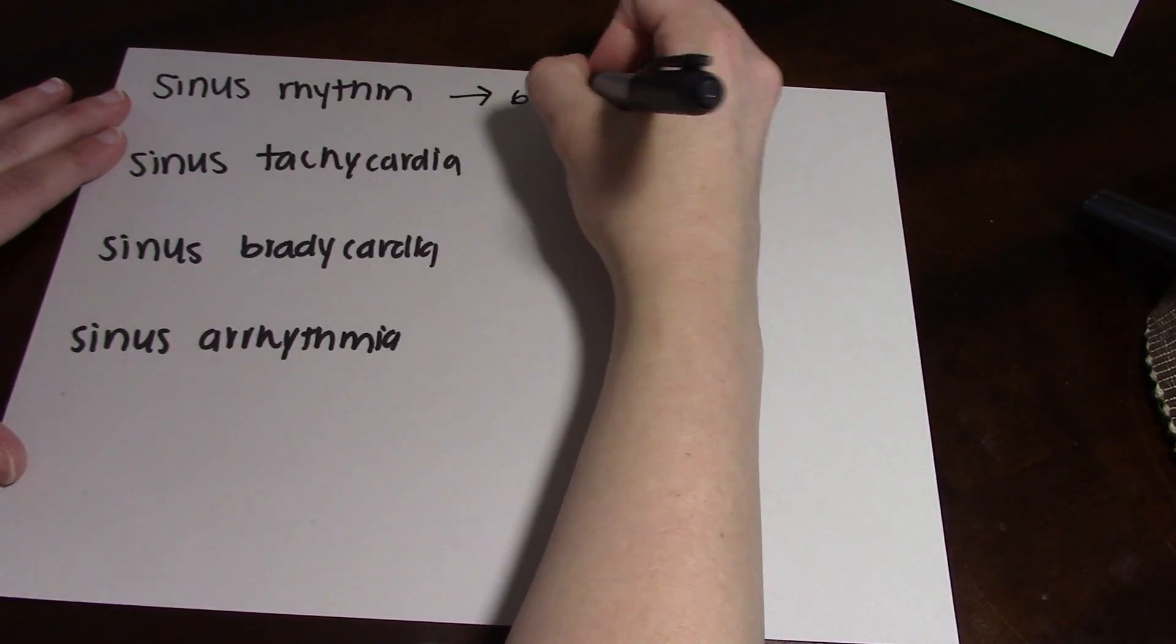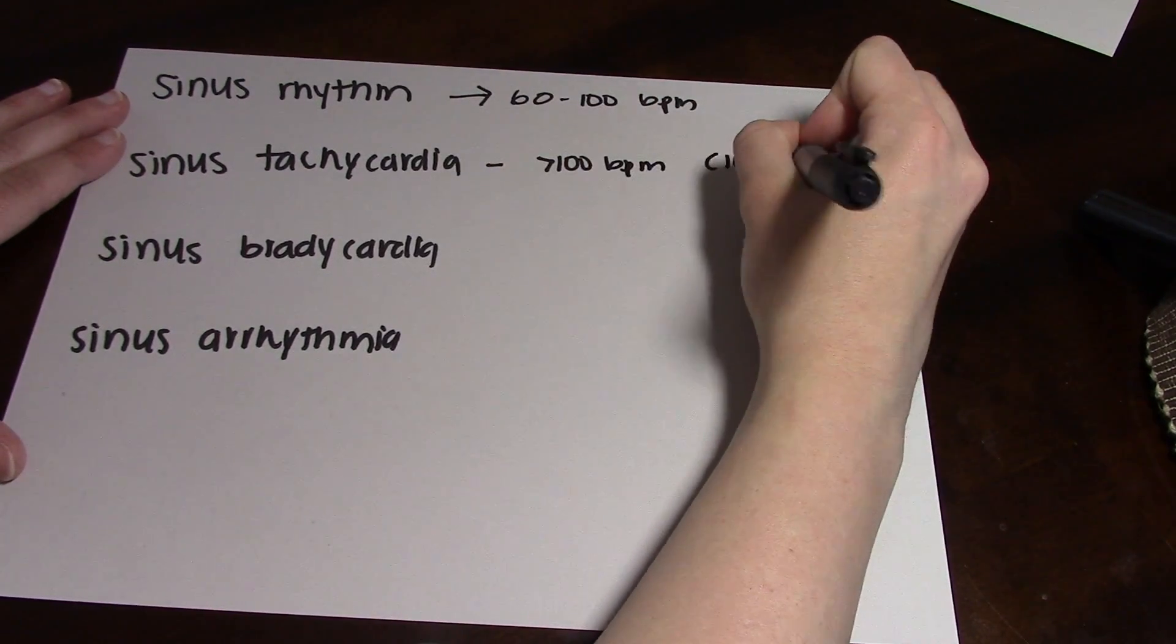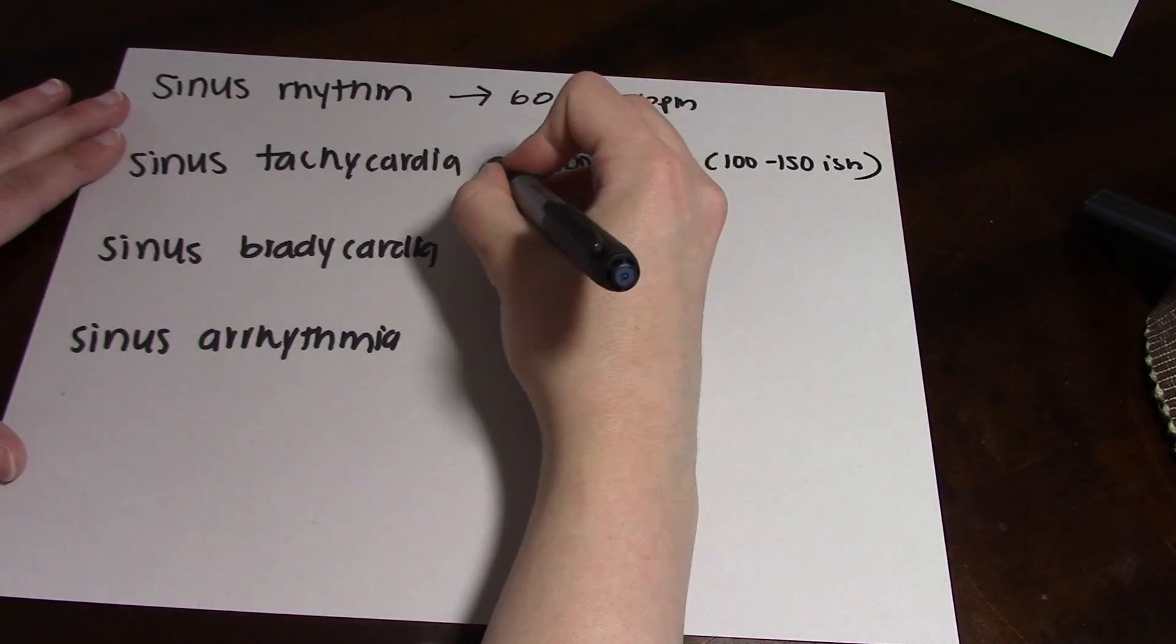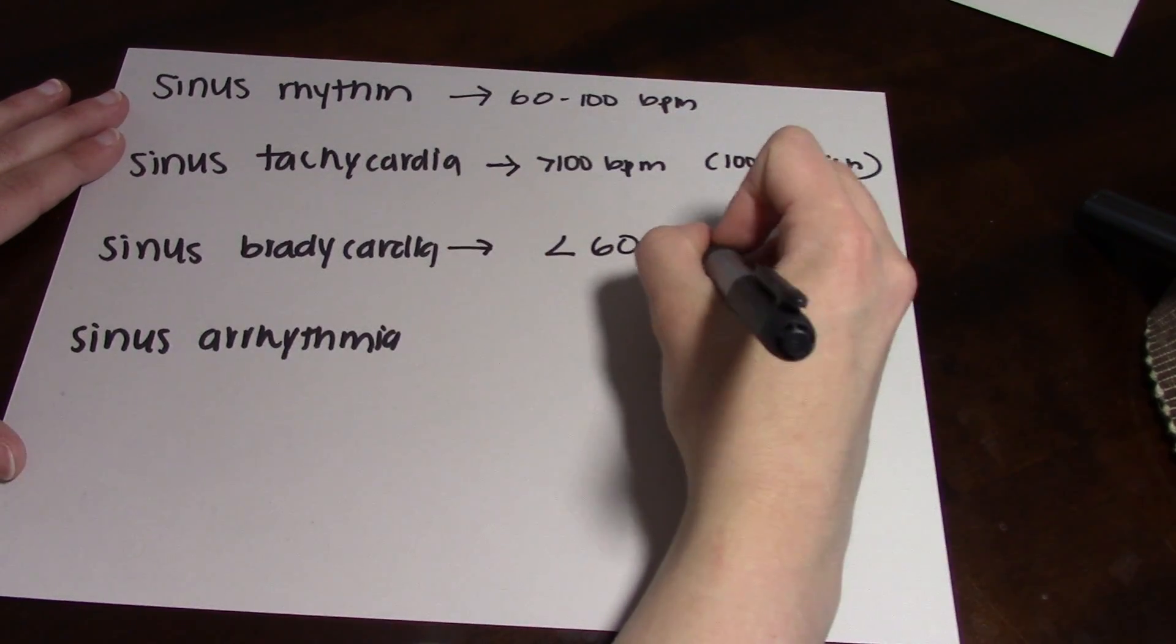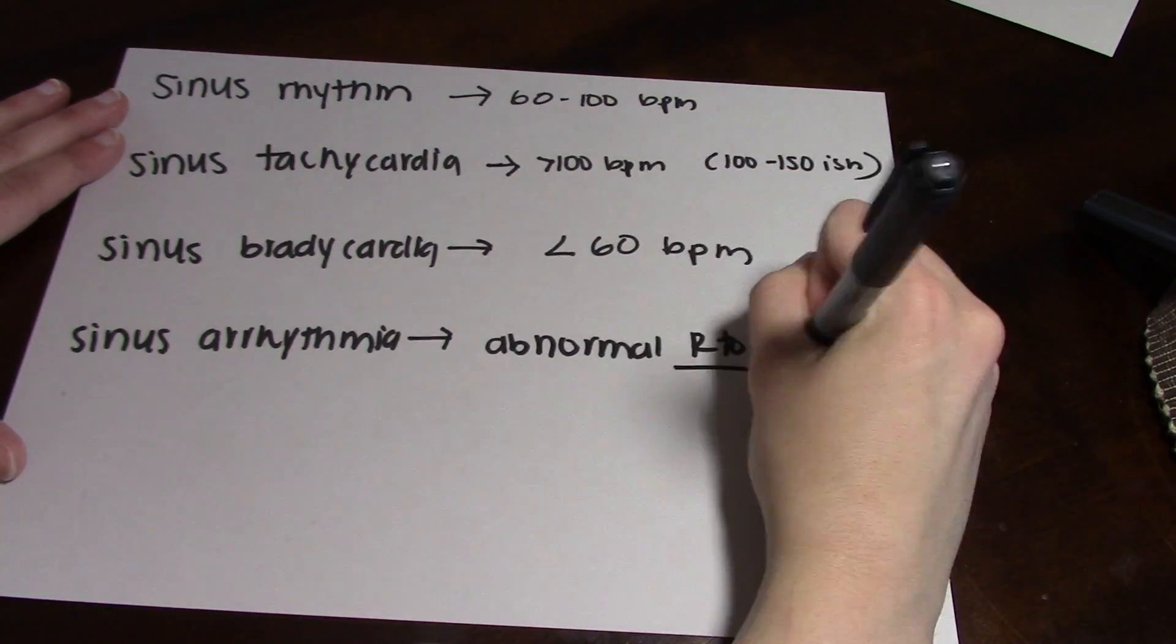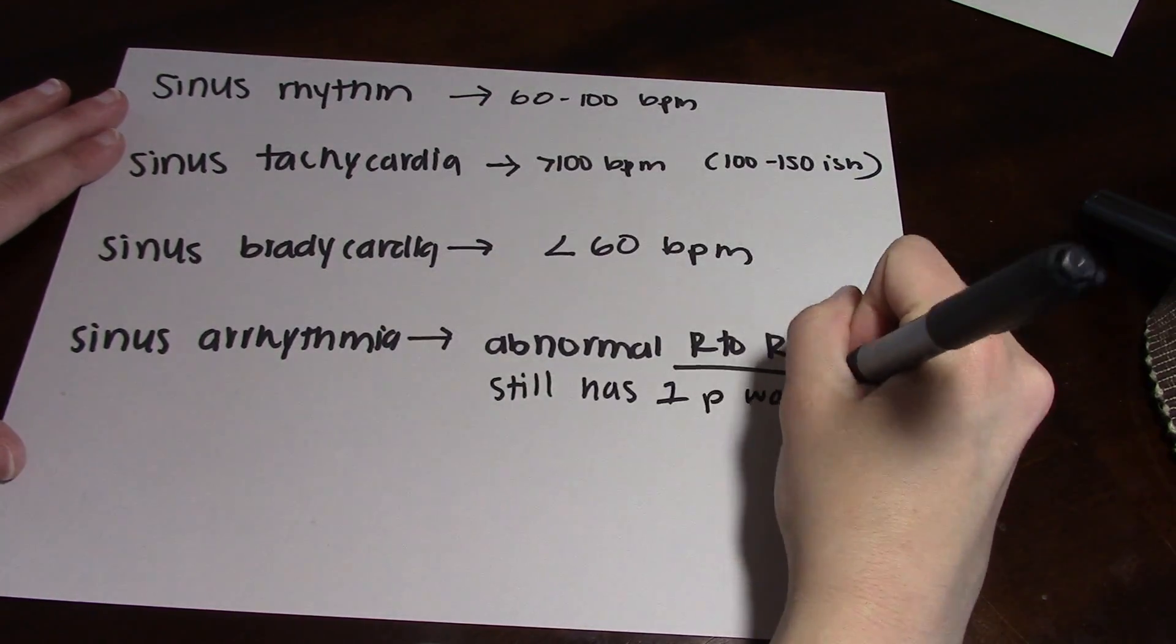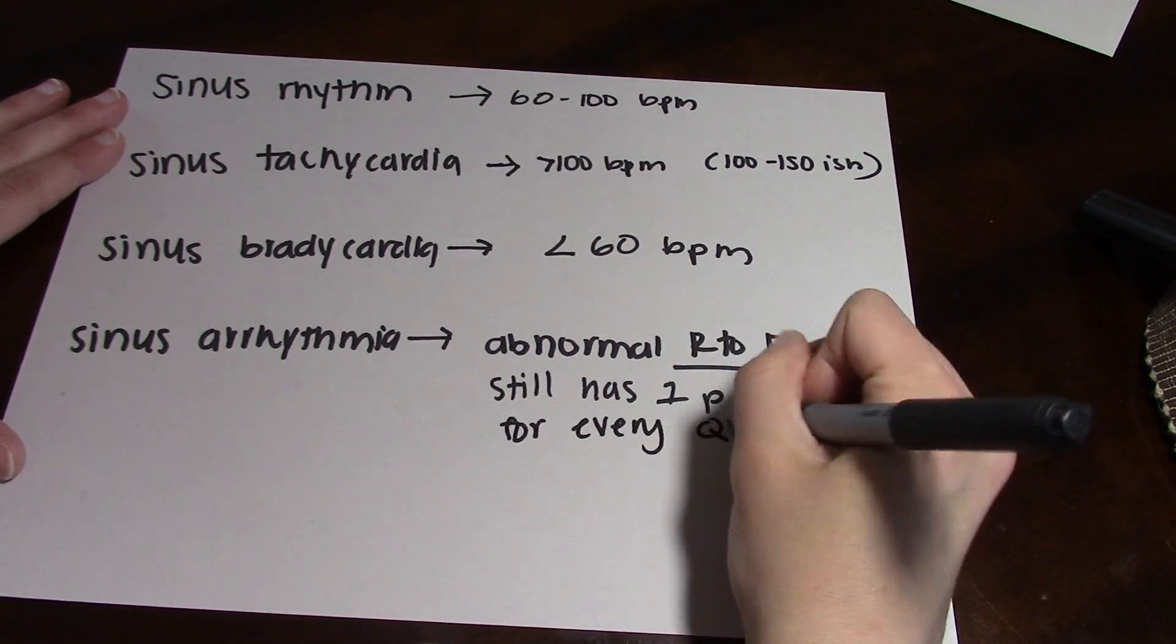Sinus tachycardia is 100 to 150 ish beats per minute. Sinus bradycardia is less than 60 beats per minute. And your sinus arrhythmia can have any really varying beats per minute, except the difference here is that your R to R's are abnormal and uneven. But you will still have one P wave for every QRS in a sinus arrhythmia.